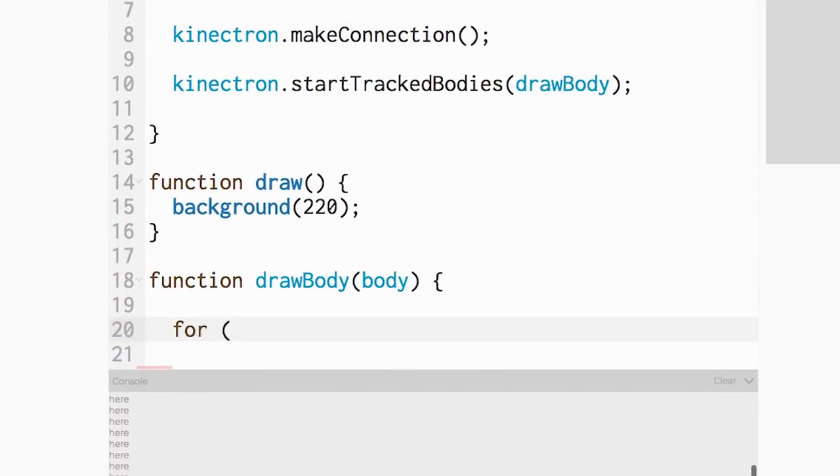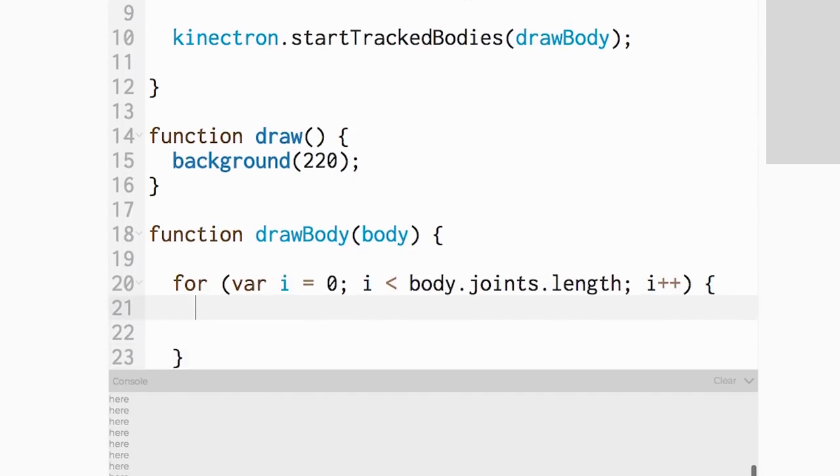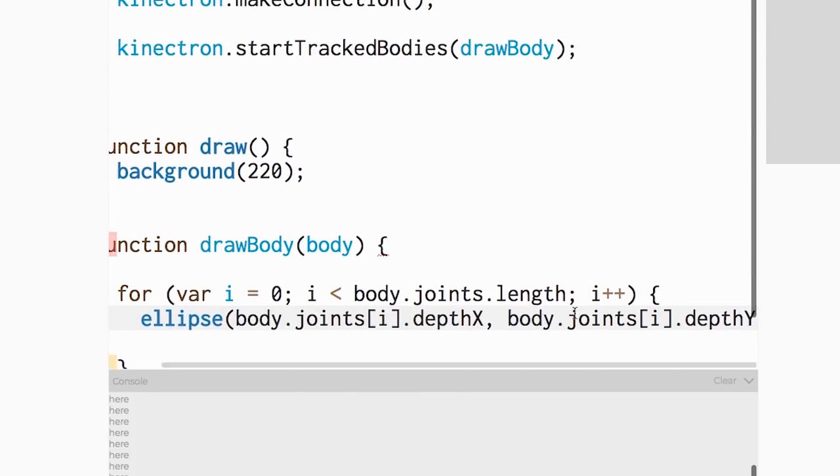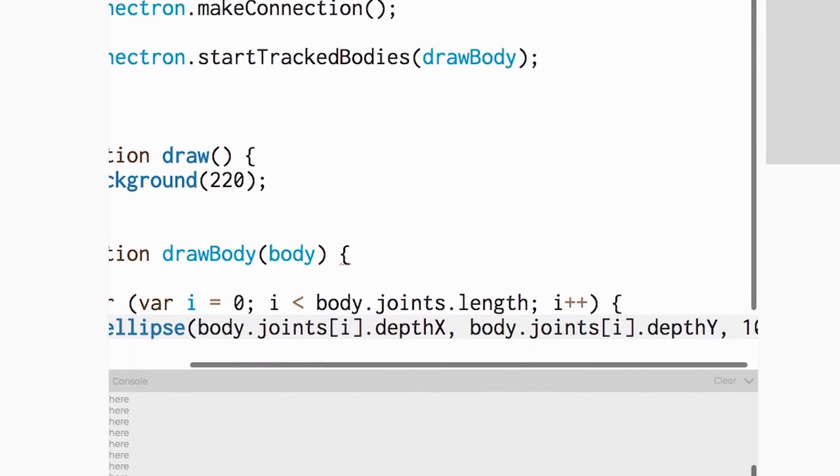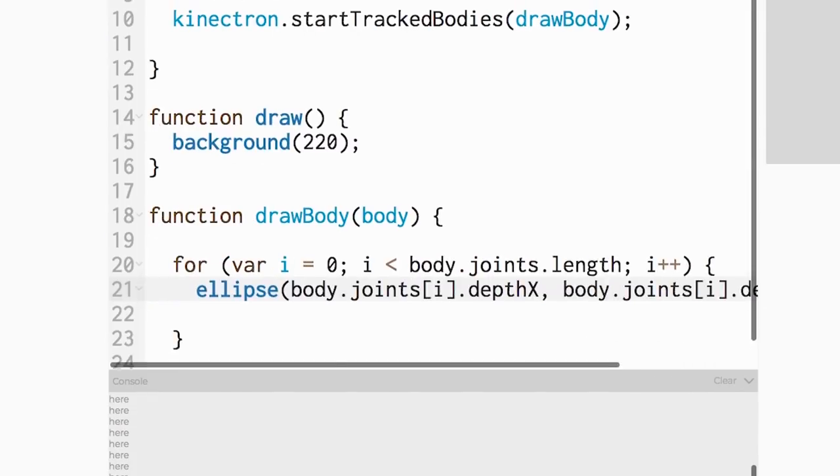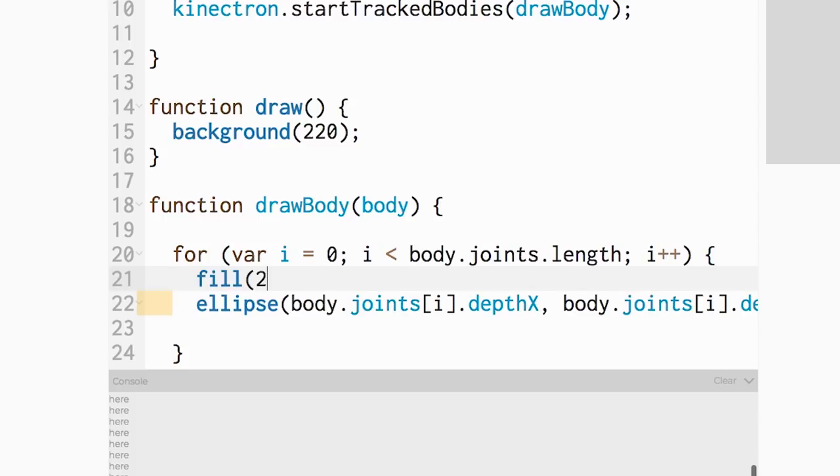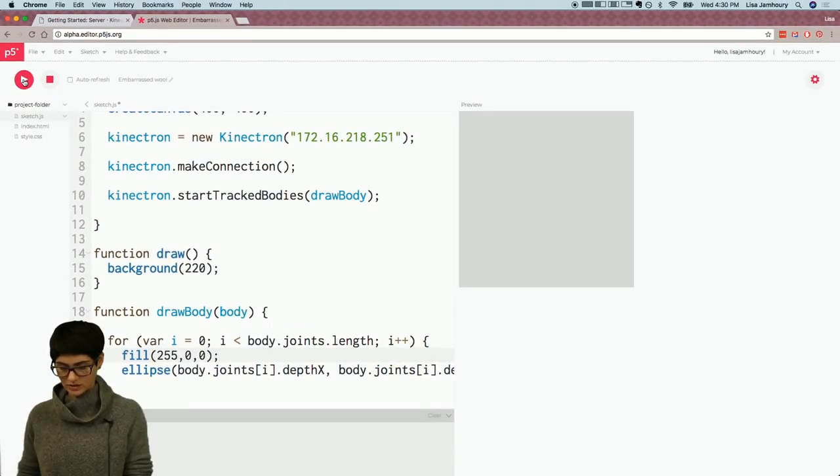So I'll do that by creating a for loop to go through all of the joints in the body and draw them to the screen. So I'll create a simple for loop. I is less than body dot joints, which is the array of joints on each skeleton and the length of that. And then I plus plus, so iterating through all 25 joints. And then I'm going to draw a circle for each of those joints. And I'll put it at depth x and depth y. And then I'll make it 10 by 10. Great. Great. And we'll make those red for now. Great. So we'll run that.